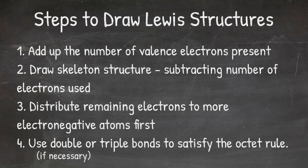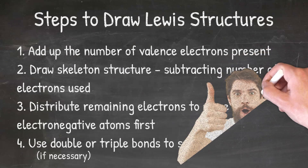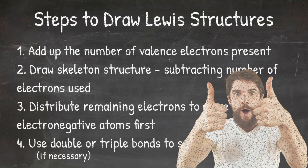As long as you follow these rules in order, you should never draw a Lewis structure wrong again. So now let's look at some examples.